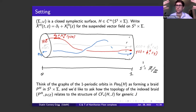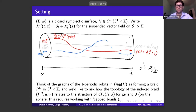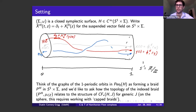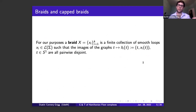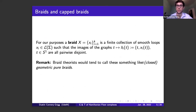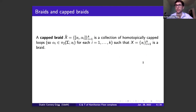For the Conley-Zehnder index to be a well-defined integral grading on the sphere, we need to work with capped grades, and methodologically it's nice to work with capped braids regardless because they keep you honest. By a braid I mean just a finite collection of smooth loops such that the graphs in S^1 × Σ are all pairwise disjoint — they close up at time one. These aren't fully general braids; braid theorists would call these closed geometric pure braids. A capped braid is what happens when I take a braid and assign a capping — up to homotopy — to each strand.